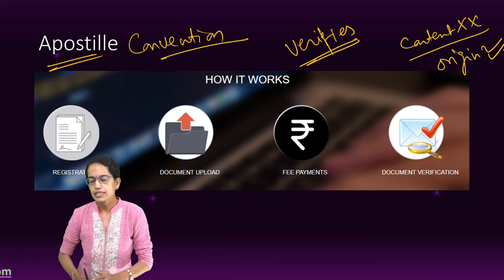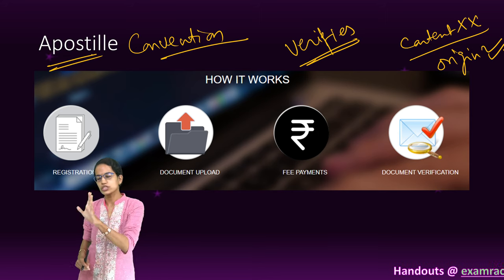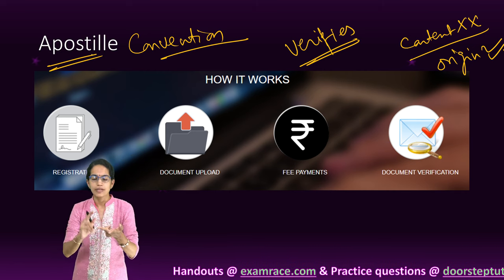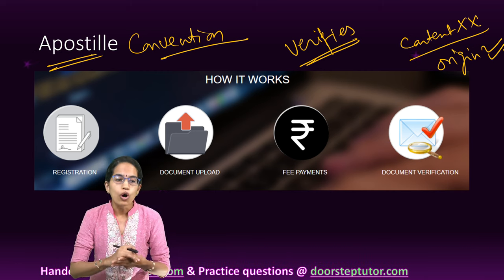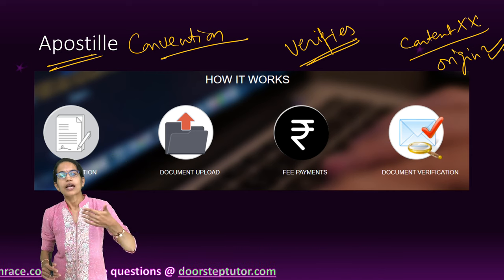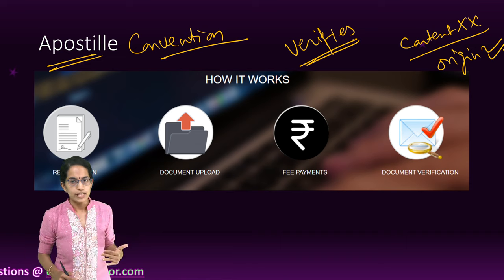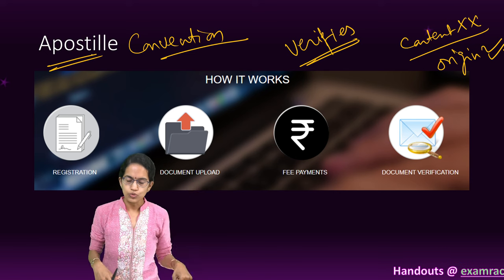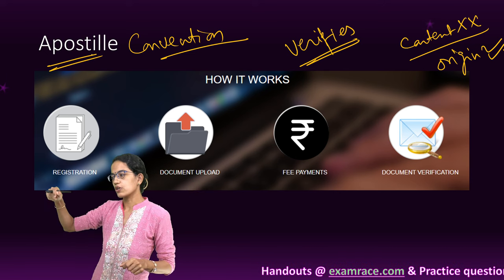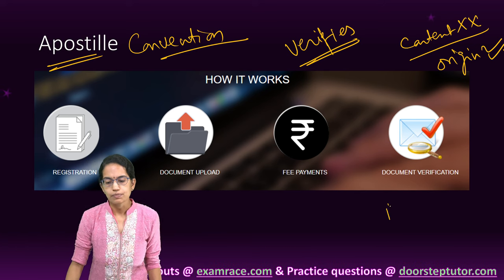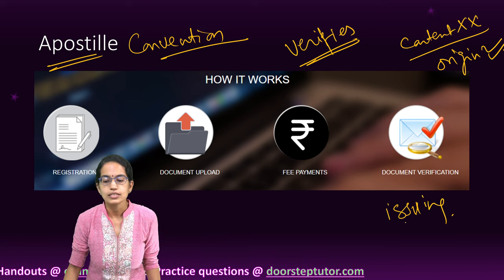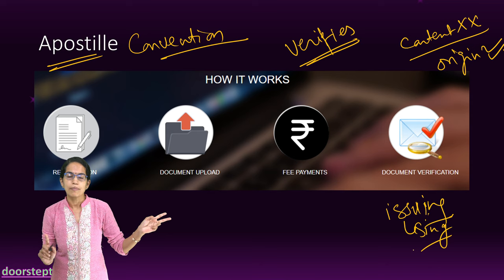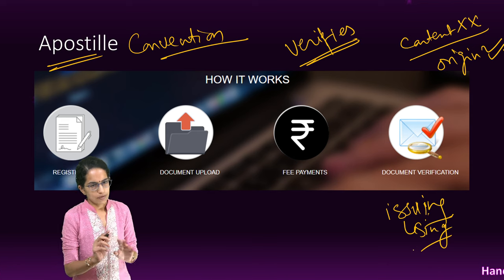What is apostille? Apostille is a certificate that authenticates the origin of a public document — such as a birth document, death document, or marriage certificate. This works under the apostille convention: if both the country where the document is issued and the country where it has to be used are parties to the convention, then it can be perfectly used.